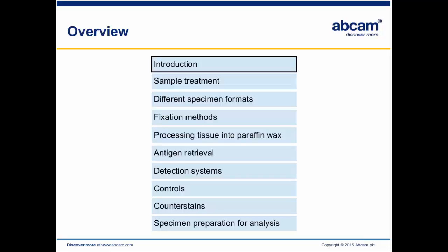We'll go through a little bit of the introduction of IHC, talk about some sample treatment if you need to use that, the different specimen formats that you might be working with, fixation methods and processing tissue into paraffin wax, different antigen retrieval steps if you need to do that, detection systems, controls that you should use, how to use counterstains, and finally specimen preparation for analysis.